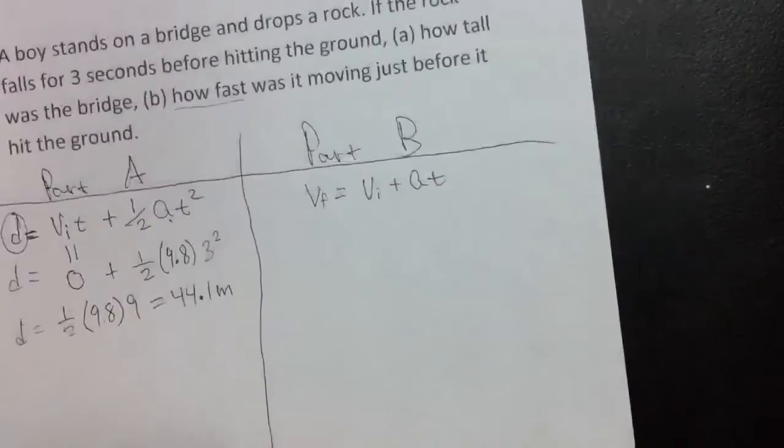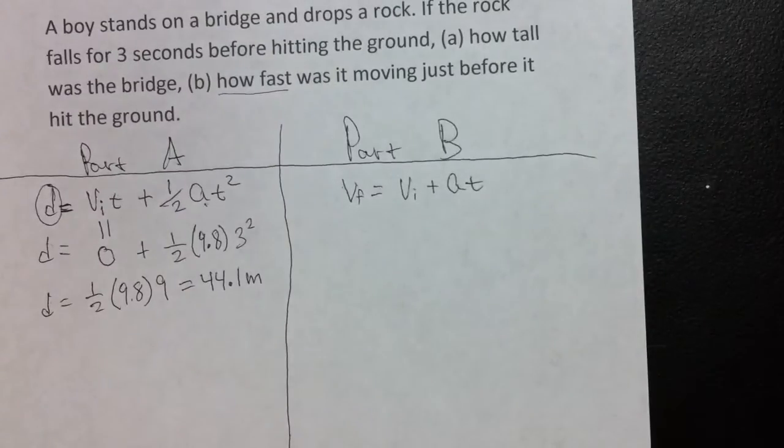Now on to Part B. Part B is asking for the velocity just before it hits the ground. To find this, we're going to use the equation: the final velocity is equal to the initial velocity plus the acceleration times time.